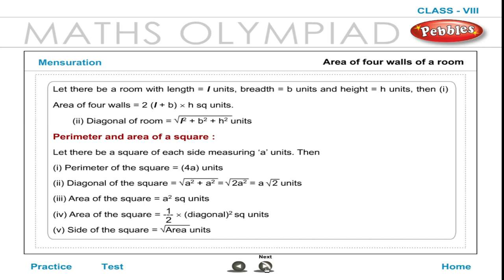Perimeter and area of a square. Let there be a square of each side measuring A units. Then: 1. Perimeter of the square is equal to 4A units. 2. Diagonal of the square is equal to √(A² + A²) which is equal to √(2A²).